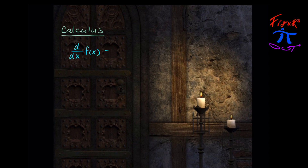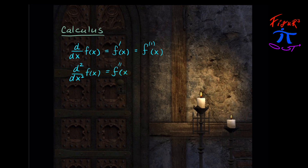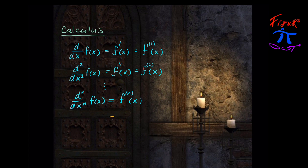Different symbols are used in calculus to represent the derivative: d by dx of f of x, or f prime of x, or f superscript 1 of x. The second derivative, d² by dx² of f of x, is equal to f double prime, and so on. The n-th derivative can be represented in many ways, but we're going to use the capital D raised to the n-th power to represent the n-th derivative. This is a differential operator on the function f of x.